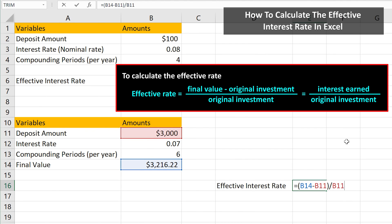Equal sign, open parentheses, cell B14, the final value, minus sign, cell B11, the original investment, close parentheses, division sign, again cell B11, the original investment.